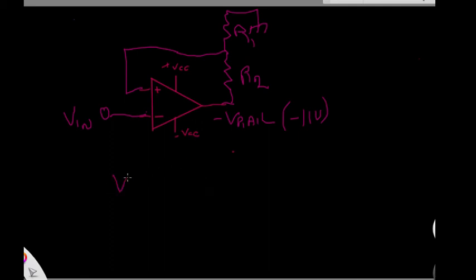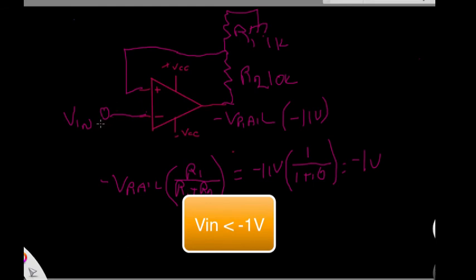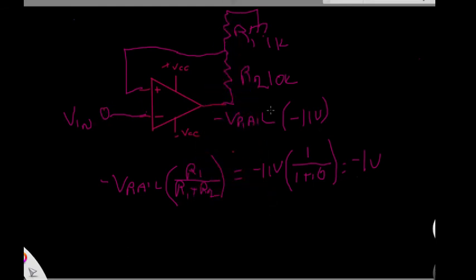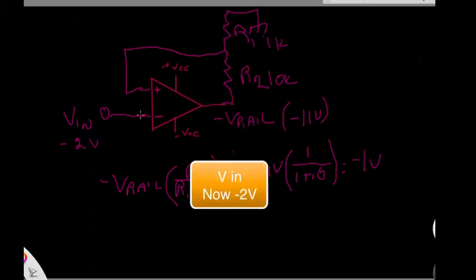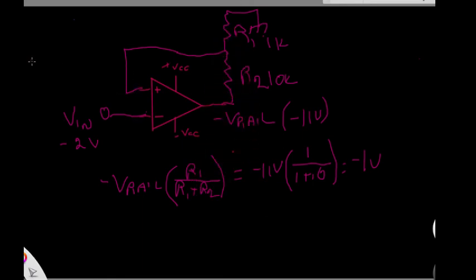Now what voltage is showing up here on the V plus pin? Well, it's going to be minus V rail times, in this case, R1 over R1 plus R2. Let's make this a 10K resistor, and let's make this a 1K resistor. That's going to work out to be 11 times over 1 plus 10. So that's going to be minus 1 volt. As long as V in stays more positive than minus 1 volt, the result is I'm going to have minus 11 volts showing up here at the output of my Schmitt trigger. Now let's change V in to be minus 2 volt.